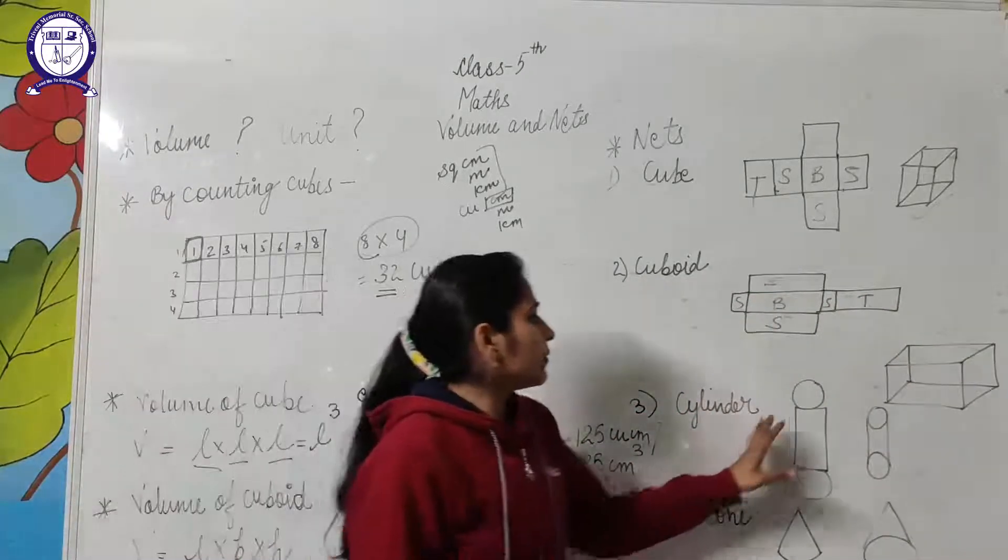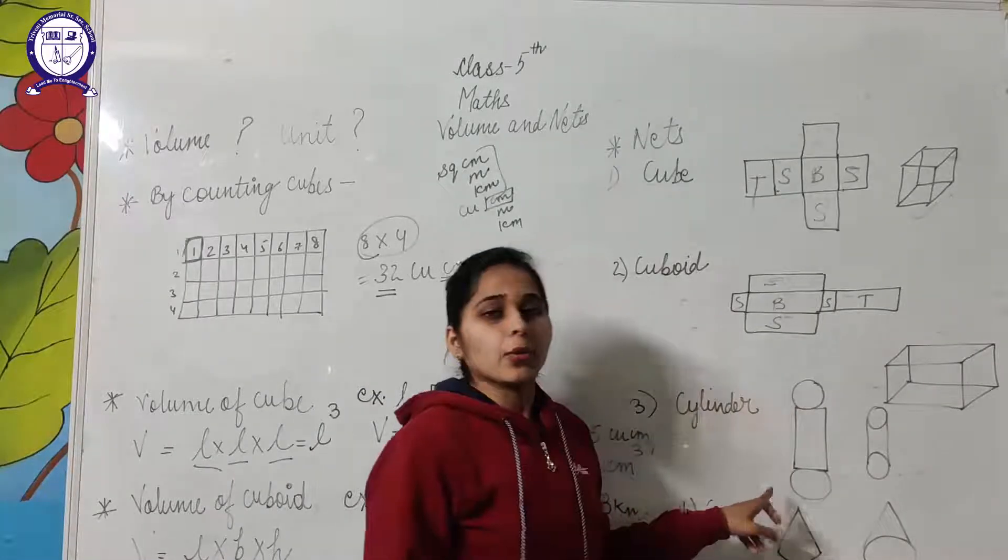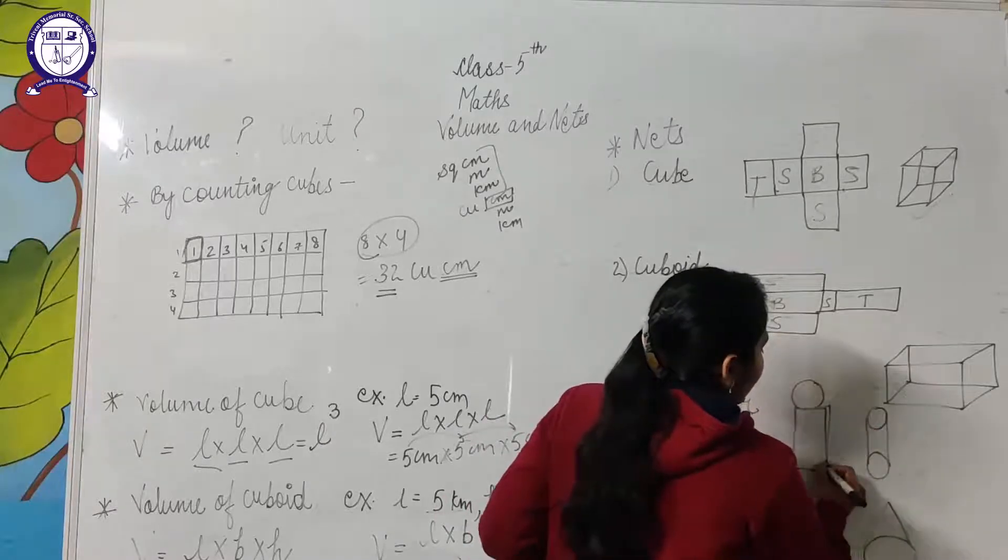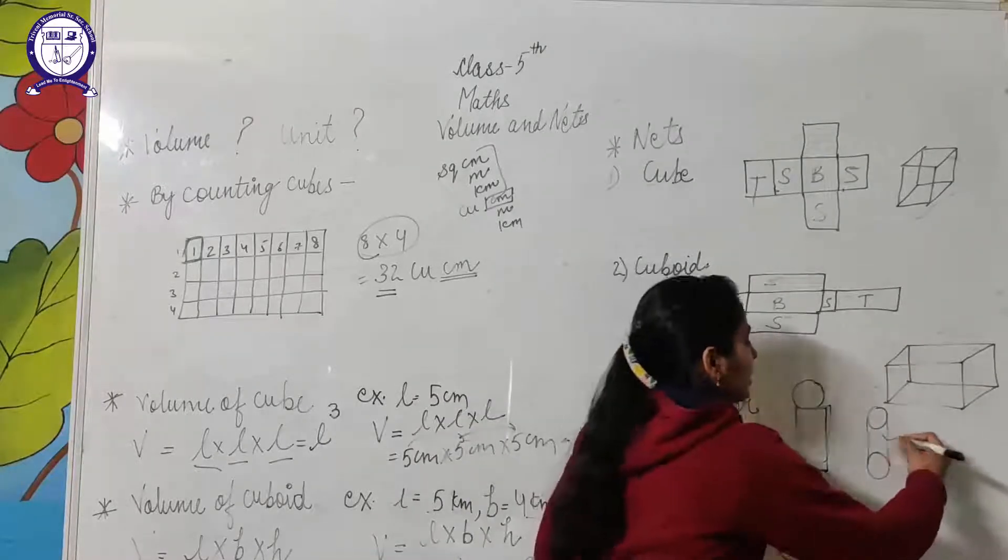While opening a cylinder, we have two circles, one at the top and one at the bottom. And in the middle of that, a rectangle will be there. When you close this, you will get a figure like this.